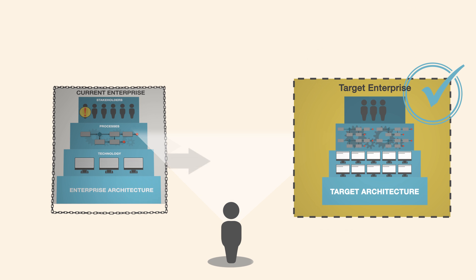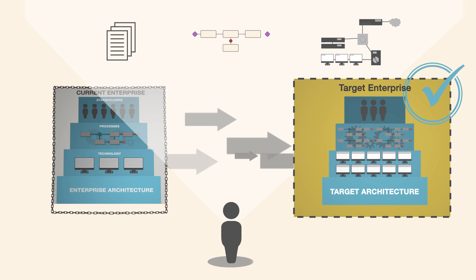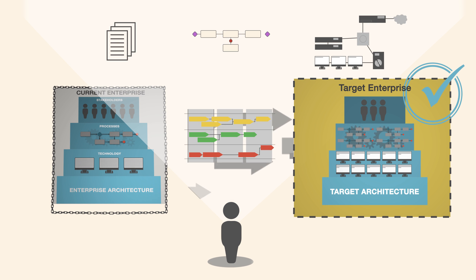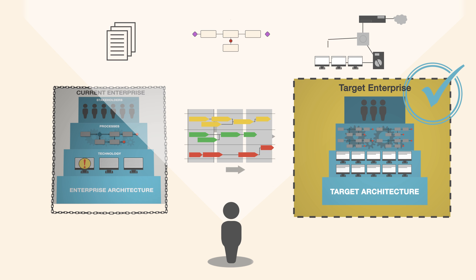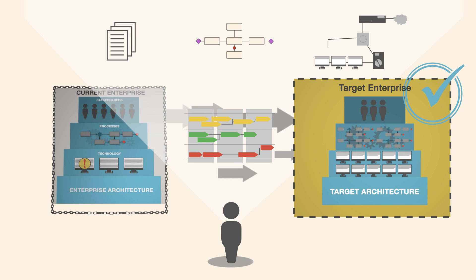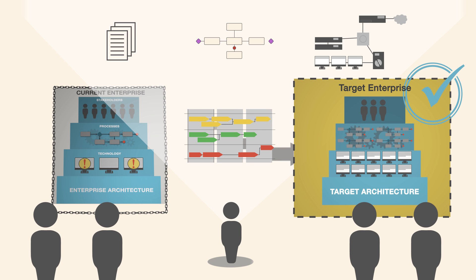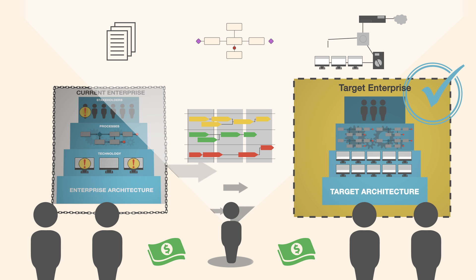Enterprise architects produce pictures, diagrams, plans and roadmaps that explain the current limitations and show how changes could make things better. They follow processes to take into account the opinions and views of all stakeholders and make the best of available resources and investments.